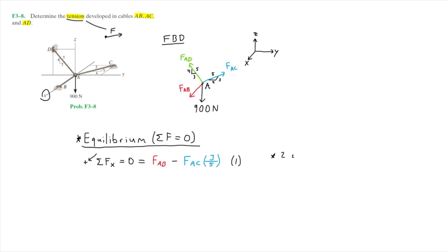Notice that in this equation we have two unknowns, so we are unable to directly solve it just yet. We need to find another equation, so moving on we can do the sum of forces along the y axis, where the positive direction is to the right.